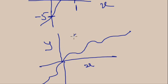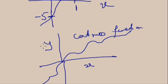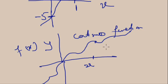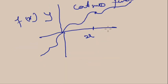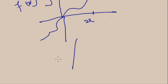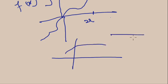If for any value of X, Y has a fixed, well-defined value, then this type of function is called a continuous function — because for all values of X, you have one corresponding value of Y. This is called a continuous function.